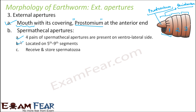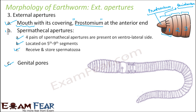The function of the spermathecal aperture is to receive and store spermatozoa. For reproduction, you need sperm and egg. In the earthworm, a single individual can produce both sperms and eggs — both male and female are present in the same organism. During mating, two earthworms exchange sperms, and these apertures are used to receive and store the spermatozoa from the other earthworm.